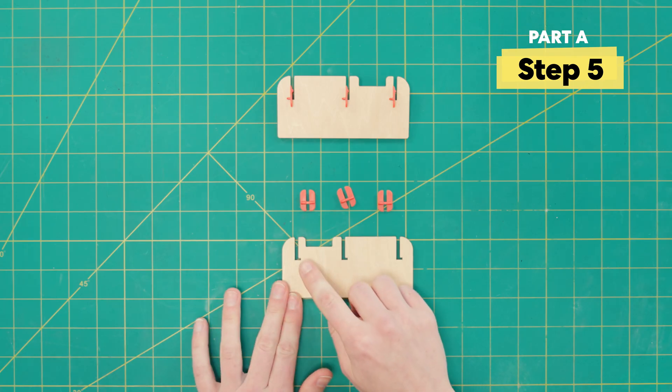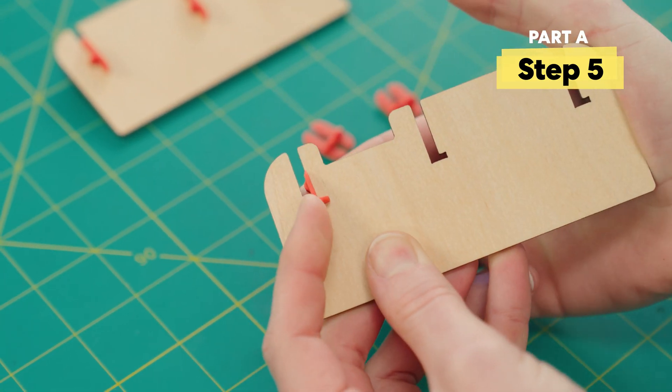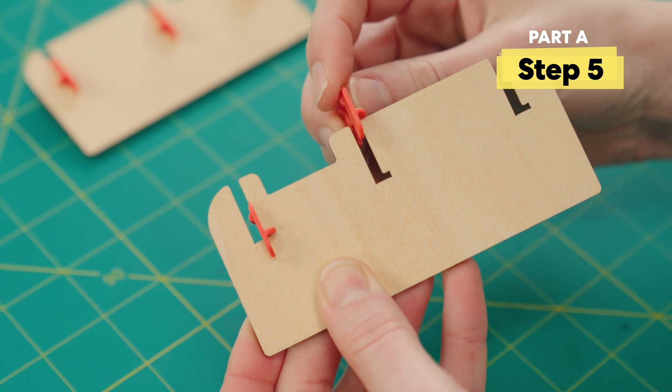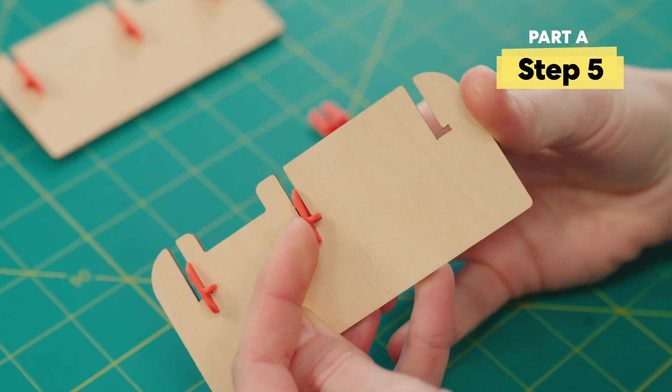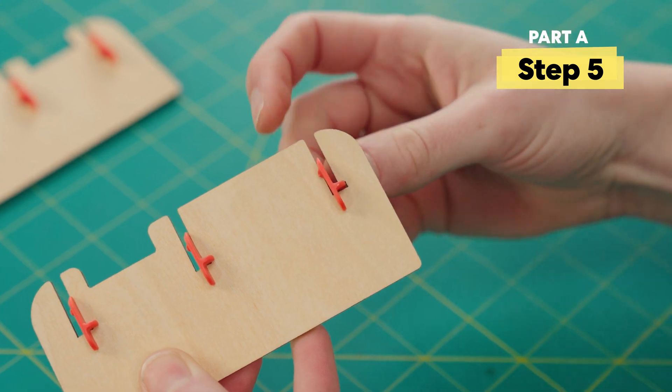Alright, so for this step we're going to do the exact same thing, just mirrored. So remember that ridge always points in the same direction as that little slot. Let's repeat three times and then just double check that everything is facing the right way.